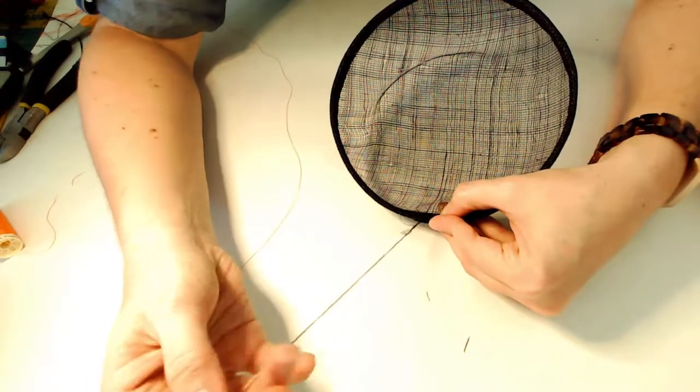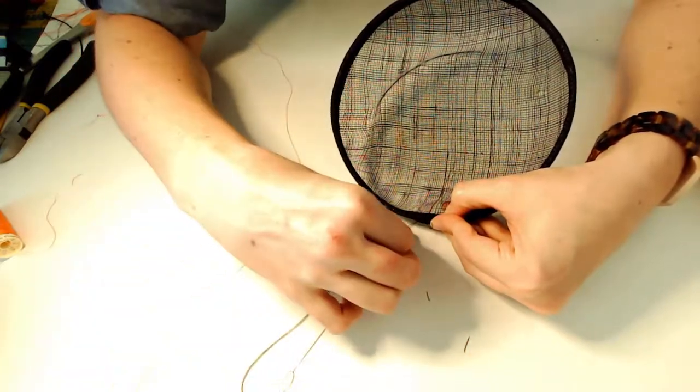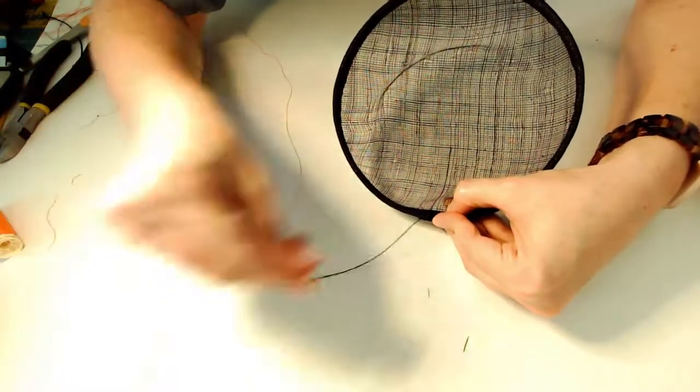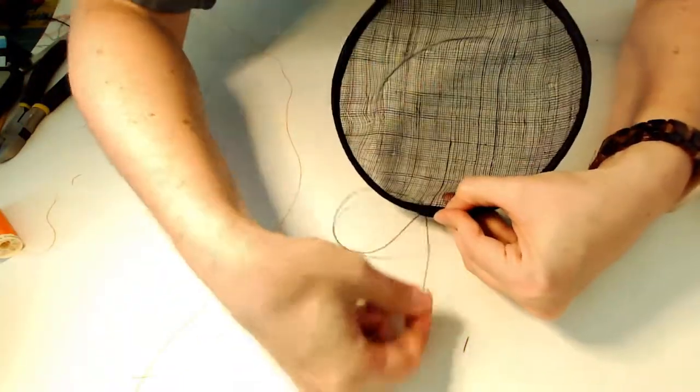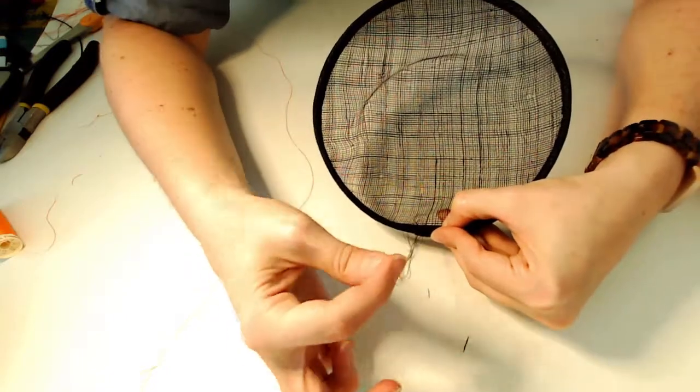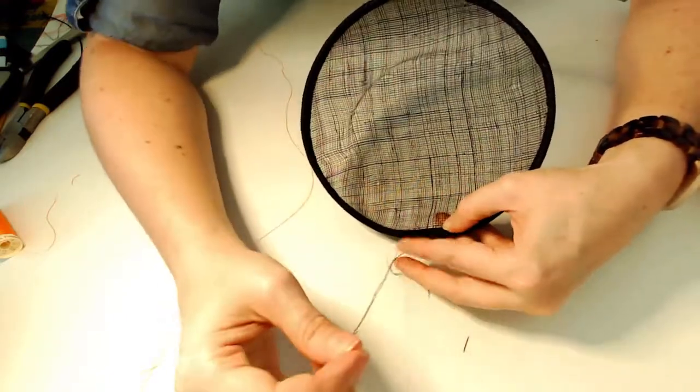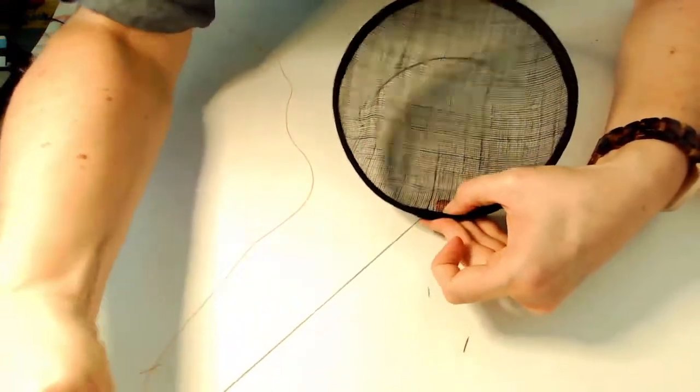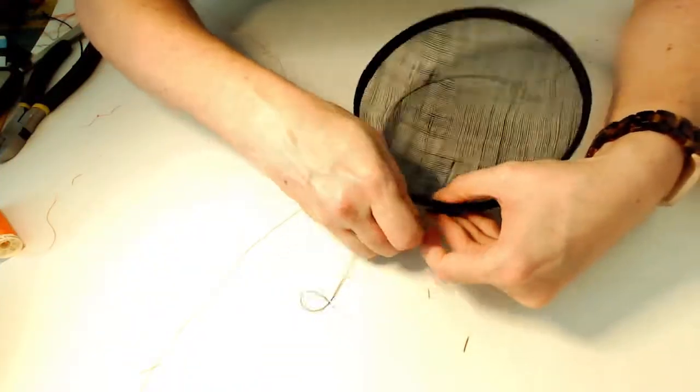And it creates kind of like a locking knot that won't come undone. And then I do that a second time. So I'm going to make one stitch and put my needle through the loop two times. One, two, and pull. So that's done.